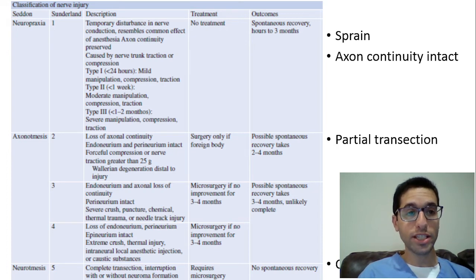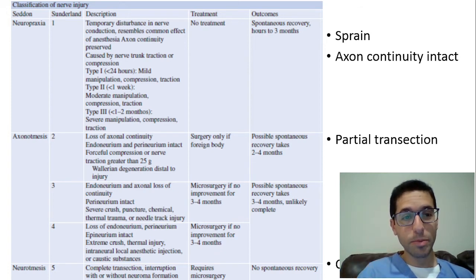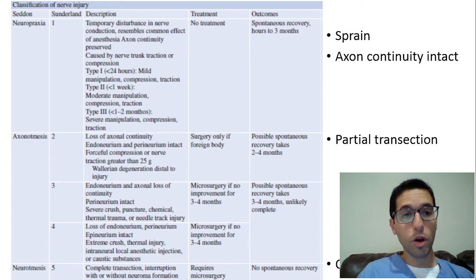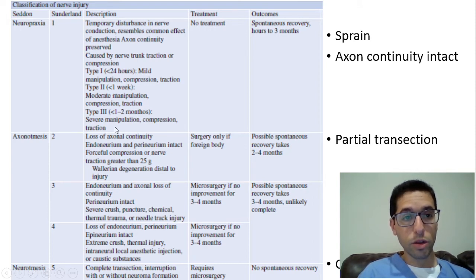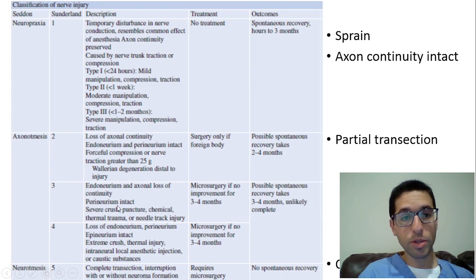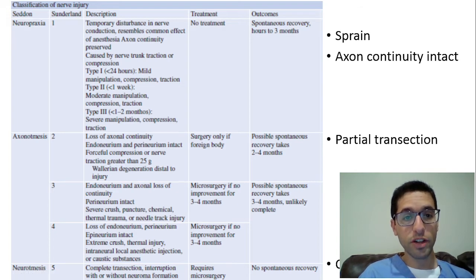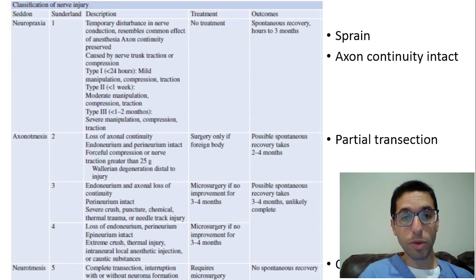Axonotmesis is a partial transection — anytime you hear 'tmesis,' think karate chop. Axonotmesis means you lost axon continuity; part of the axon is lost. The endoneurium and perineurium may be intact while just the epineurium is disrupted, or the perineurium is intact but both endo and epi are disrupted. To some degree, some nerve is still intact. For axonotmesis, we consider surgery if there's no improvement after a few months, but spontaneous recovery is possible. We watch and wait, doing serial nerve testing.